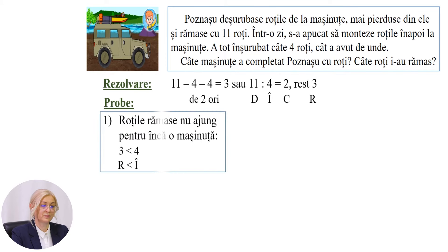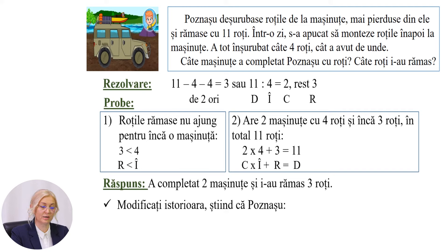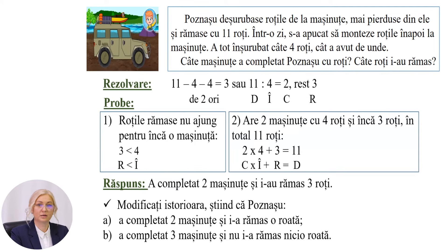Probele sunt următoarele. A. Roțele rămase nu ajung pentru încă o mașinuță. Deoarece restul este mai mic decât împărțitorul. 3 mai mic decât 4. Și proba a doua. Are două mașinuțe cu 4 roți și încă 3 roți. În total 11 roți. 2 împărțit la 4 plus 3 este egal cu 11. Deci răspunsul este: a completat două mașinuțe și i-au rămas 3 roți. Modificați istorioara știind că poznașul a completat două mașinuțe și i-a rămas o roată. Cazul 2: a completat 3 mașinuțe și nu i-a rămas nicio roată. Sunt sigură că veți reuși.